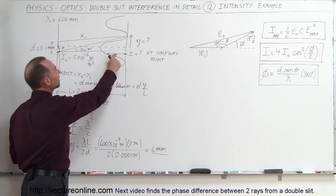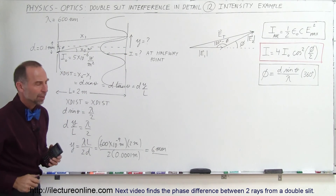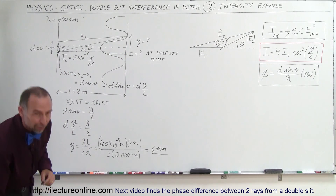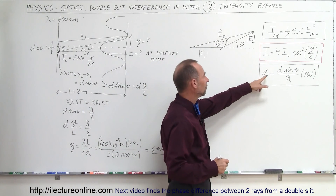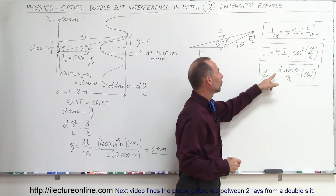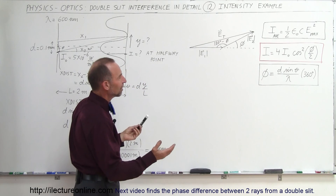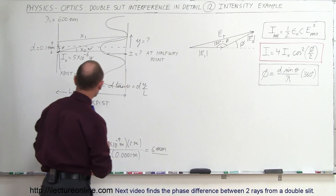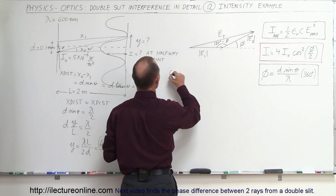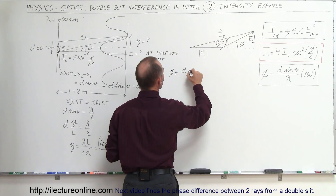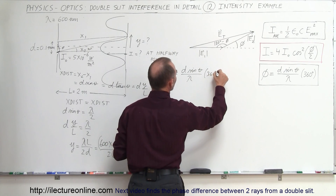Now for the second question: what would be the intensity at the halfway point between the central maximum and the first minimum? We're going to approach it slightly differently. We're going to find the phase angle in terms of theta, and then put the phase angle in the equation and calculate the intensity. To find the phase angle, we need to find the sine of theta. The phase difference is equal to d times the sine of theta divided by lambda, times 360 degrees.